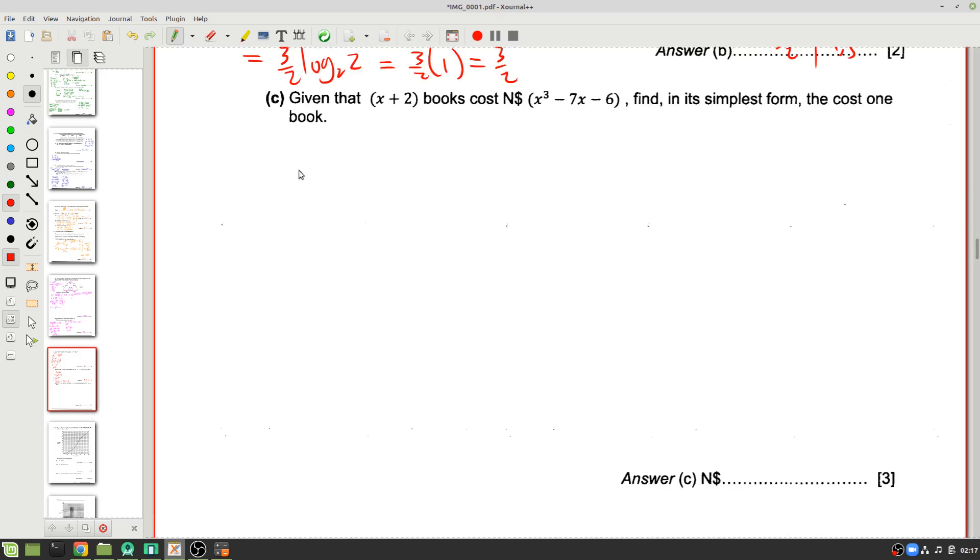Question C. Given that X books cost that much, find the cost of 1 book. Let's just imagine we had nicer numbers. Let's say they said the cost of 5 books is $30. How much is 1 book? Well, what we'll do is we'll say 30 divided by 5 to get 6, right? 30 divided by 5 will give us $6. So we're just going to use exactly the same thought here. We're going to say the total cost, which is X cubed minus 7X minus 6, divided by... Let me just rewrite that a little bit.